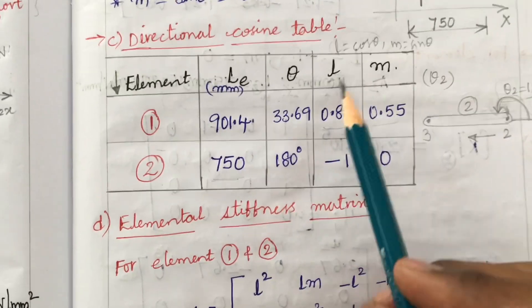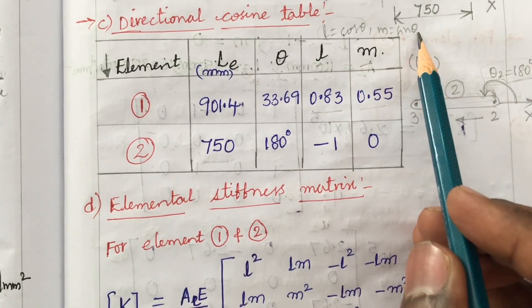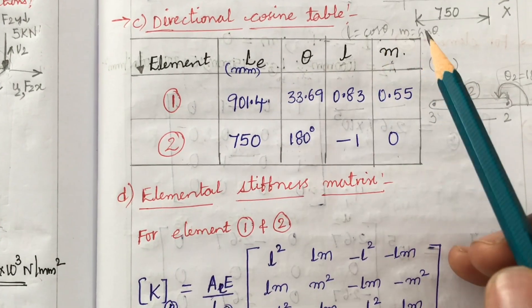So theta 2 is nothing but 180 degrees. L is cos theta: cos of 180 degrees is minus 1. M is sin theta: sin theta is 0. This is how you are supposed to work out the direction cosine table.